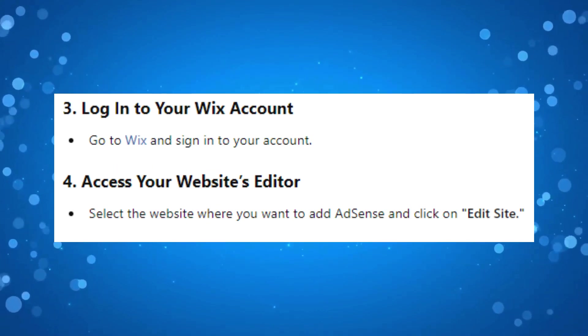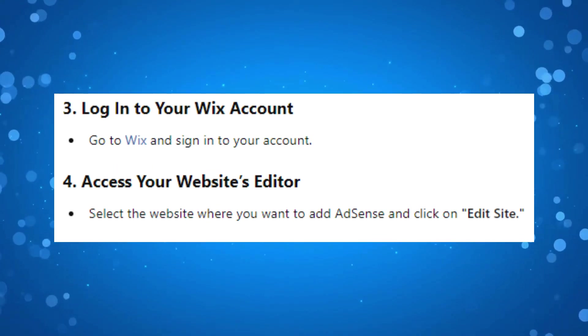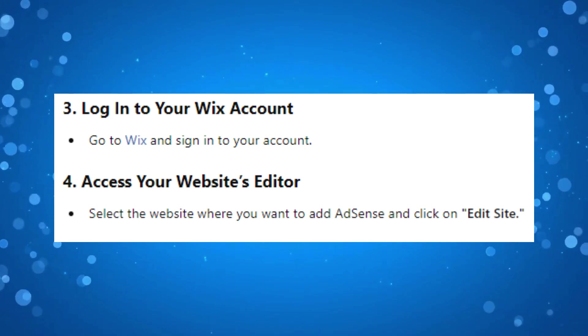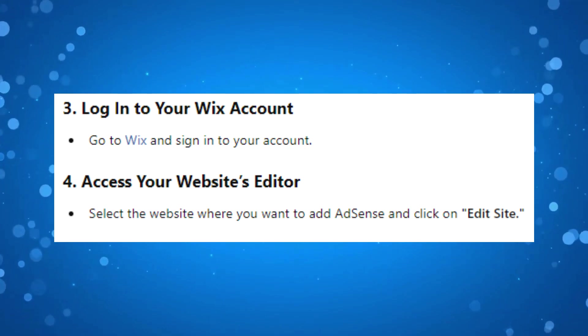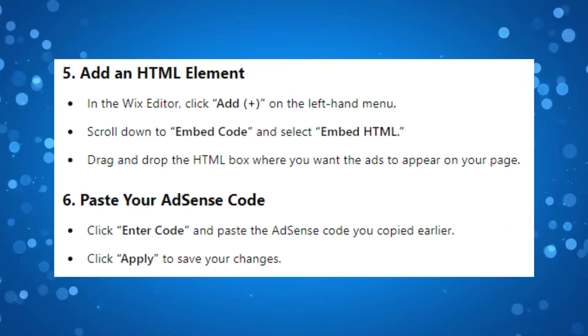Next, go to Wix and sign into your account, then select the website where you want to add AdSense and click on Edit Site.